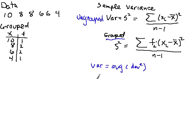I've got a set of data here that I've taken to illustrate this: 10, 8, 8, 6, 6, 4. And then I've grouped it here — there's 1 ten, 2 eights, 2 sixes, and 1 four.